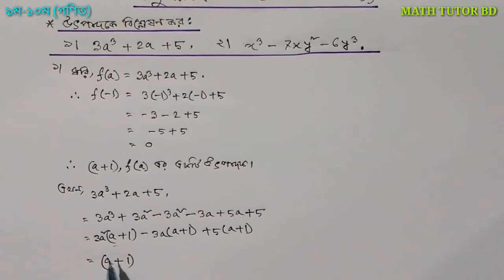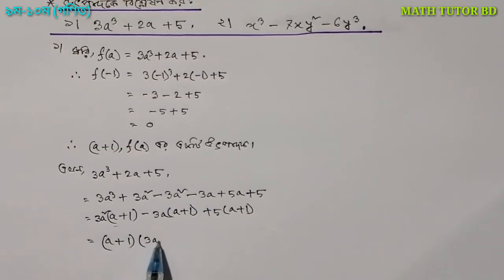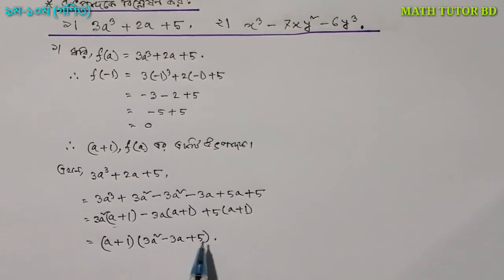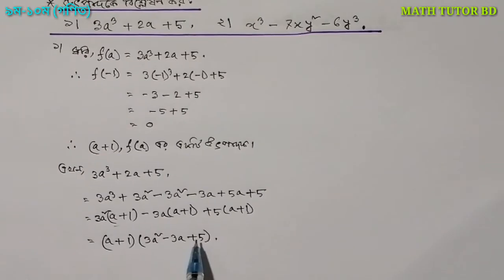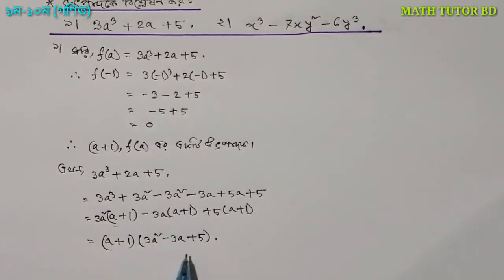So we can see the result is 3a² minus 3a plus 5. And that, combined with a plus 2a plus 5a, gives us our factored form.